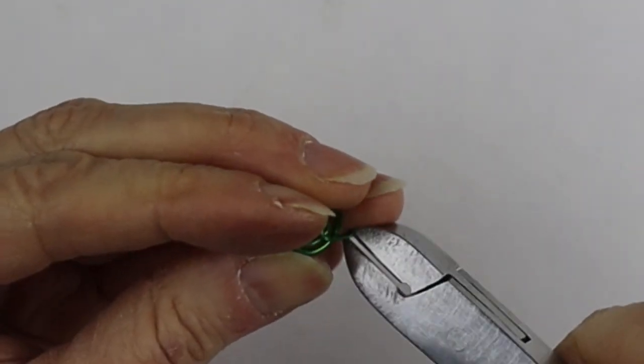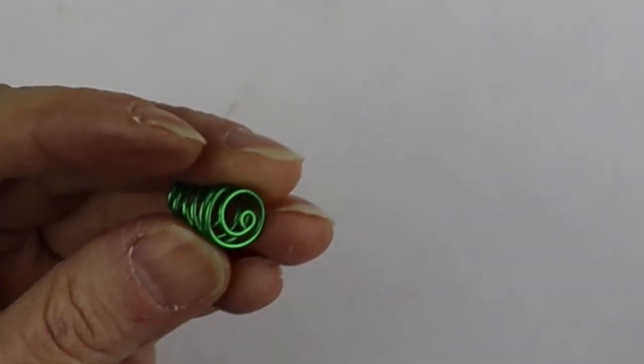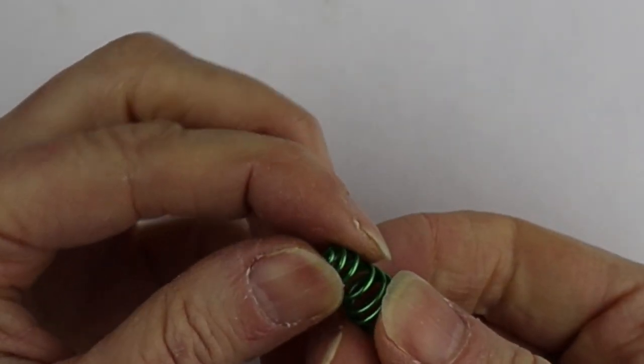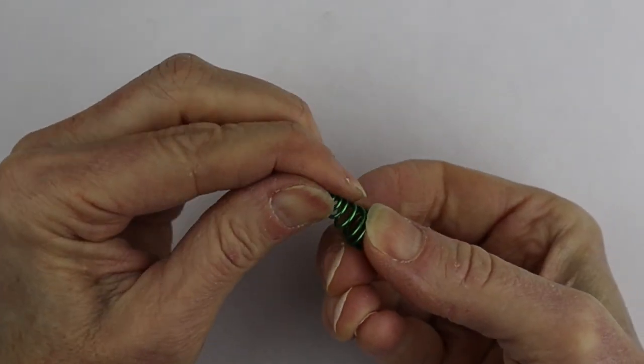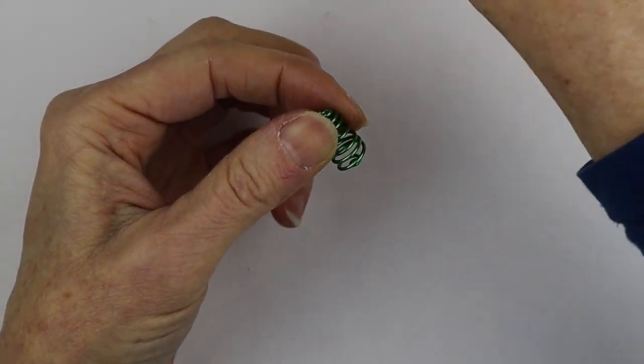And then clip the end and push that flat. So now already we have our little cone shape for the tree. That might take a little bit of practice to do.